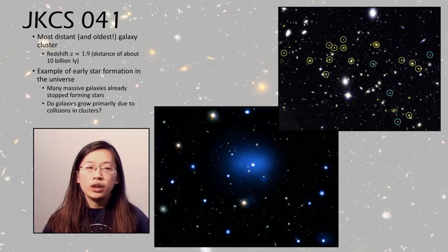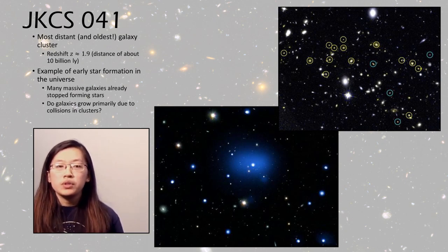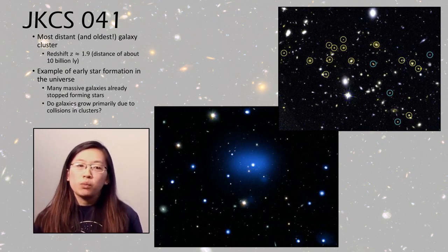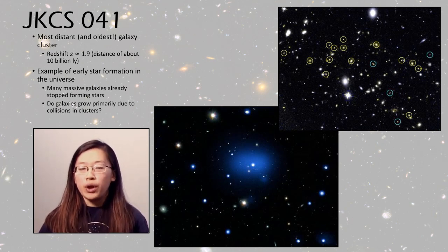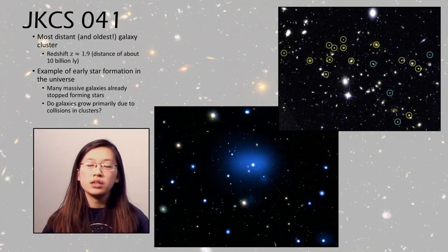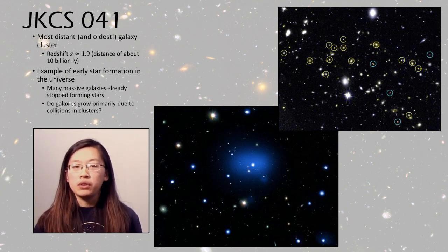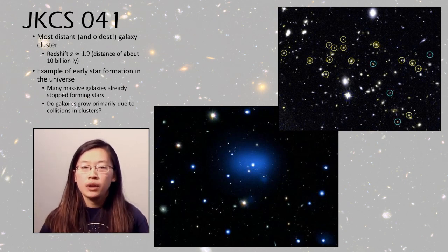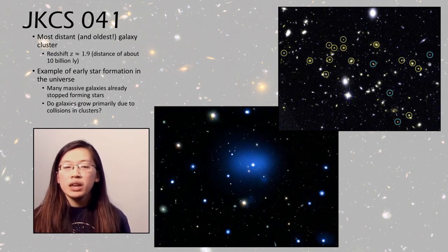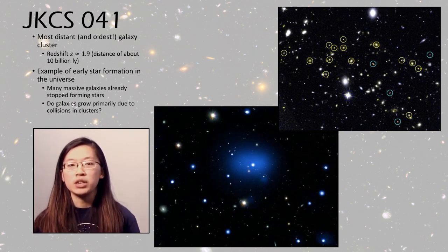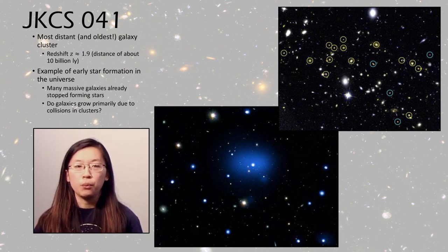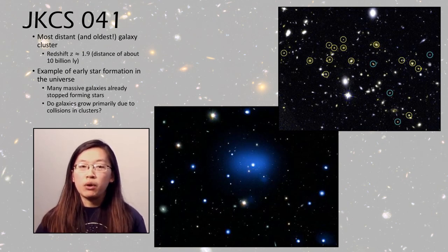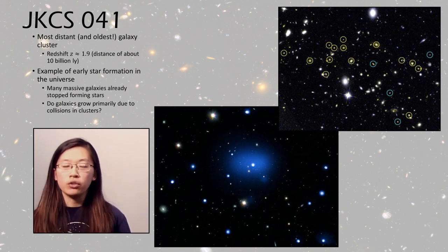Finally, our last cluster is JKCS041 — the most distant and oldest galaxy cluster known, at a redshift of about 1.9, which means it's about 10 billion light years away. Because this cluster is so far from us, light from it allows us to track the early star formation of the universe. From this cluster we've discovered that many massive galaxies actually already stopped forming stars by 10 billion years ago. An open question is whether galaxies grow primarily by colliding with other galaxies, or via some other means.